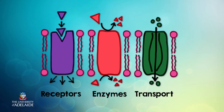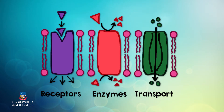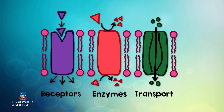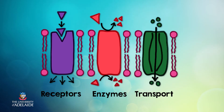Transport proteins are proteins that extend from one surface of the plasma membrane to the other. Their function is to move ions, like potassium and sodium, into and out of the cell. Some transport proteins are always open, however others are shut and only open in certain circumstances, like when an electric current passes across the plasma membrane.